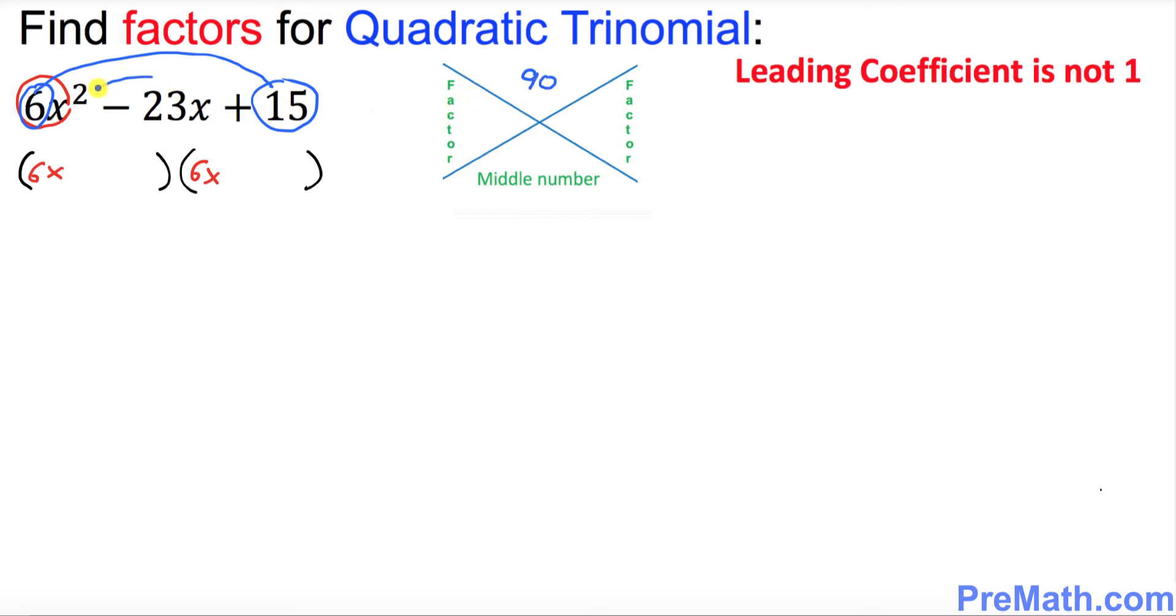Now I want you to focus on this middle number which is negative 23. Put down negative 23 right up here at the bottom. Now find two factors for 90 that if you add or subtract could give you a negative 23. Obviously those two numbers are gonna be negative 5 and negative 18.